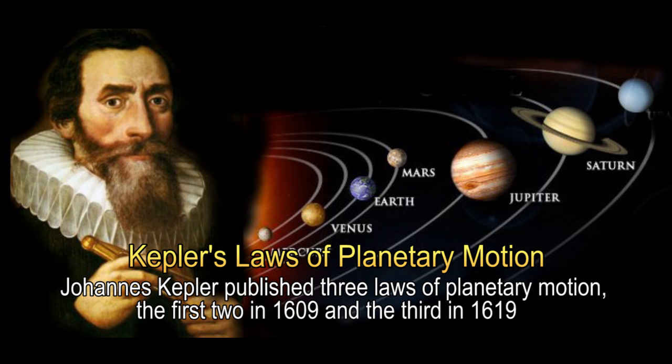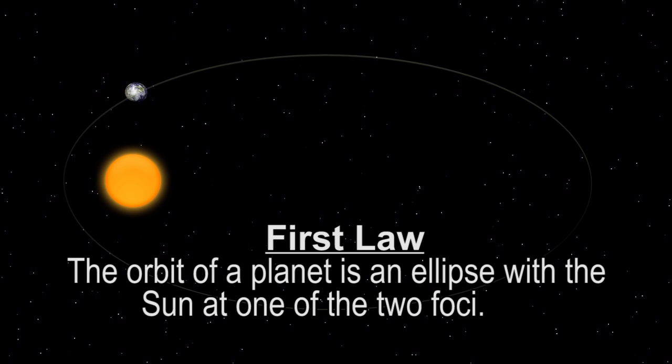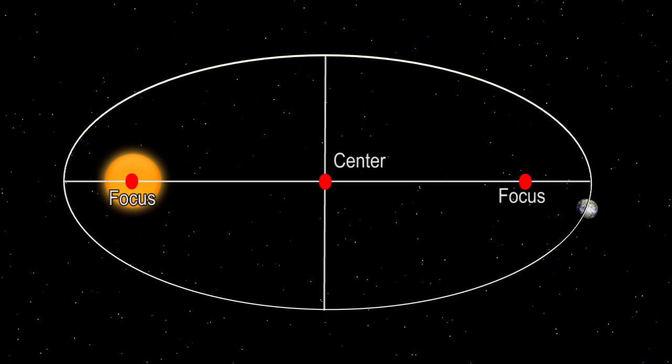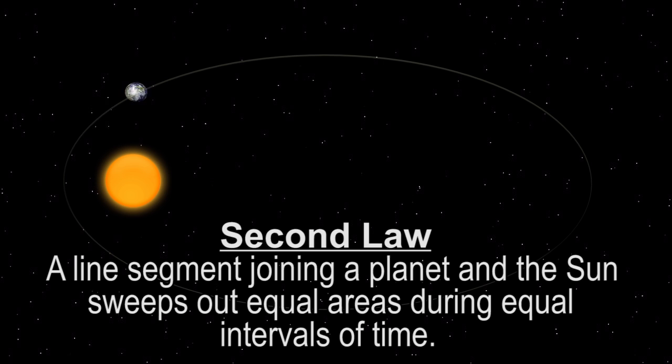Johannes Kepler published three laws of planetary motion — the first two in 1609 and the third in 1619. First law: the orbit of a planet is an ellipse with the Sun at one of the two focal points. Second law: a line segment joining a planet and the Sun sweeps out equal areas during equal intervals of time.